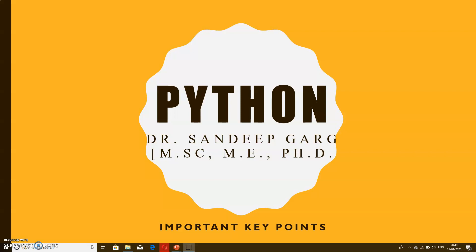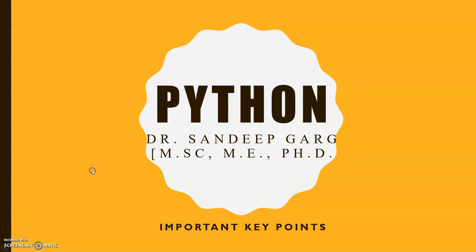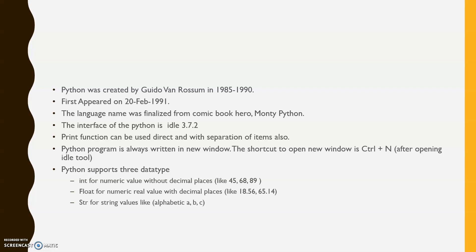In this chapter we will cover some important key points. Python was created by Guido van Rossum in 1985 to 1990, and it first appeared in the market on 20th February 1991. The language name was finalized from the comic book hero — the famous hero Monty Python. The Python interface currently used in the market is IDLE 3.7.2.